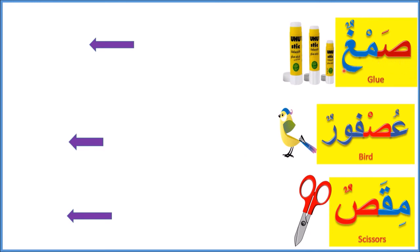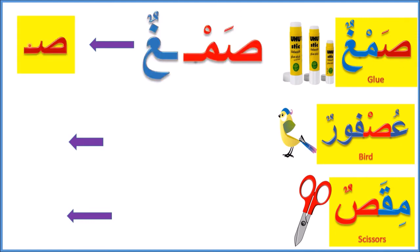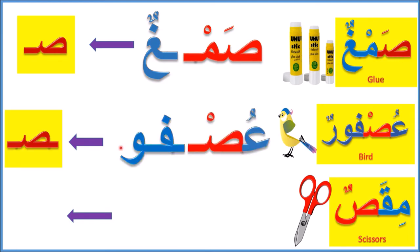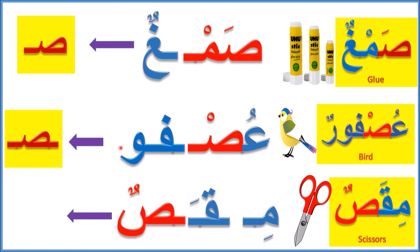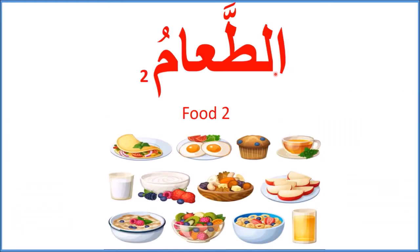Notice the different shapes of the letter Saad. At the beginning of words, like in Saaboonun, the side looks like this. In the middle of words, like in Sunduqun, it looks like this. At the end of words, like in Miqasun, it looks like this.